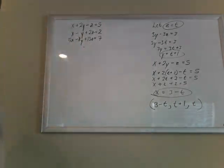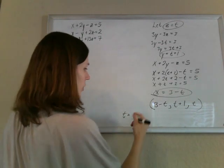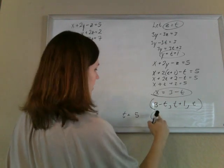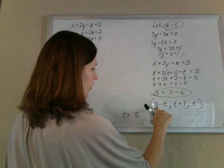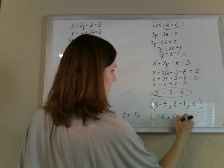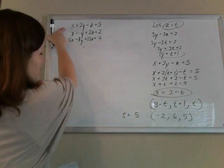Let's say that t equals, I don't know, what's your favorite number? Let's say t is 5. So this is going to be, hopefully not too big. 3 minus 5 is negative 2. 5 plus 1 is 6. And t is 5. So if I put this in here, it should work.